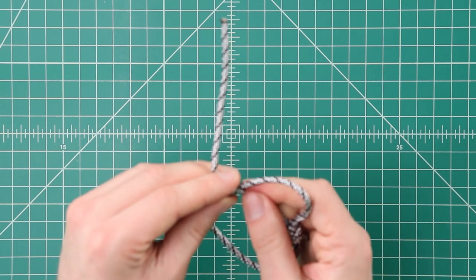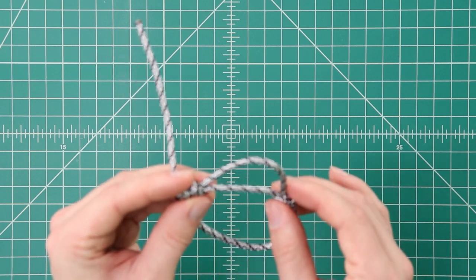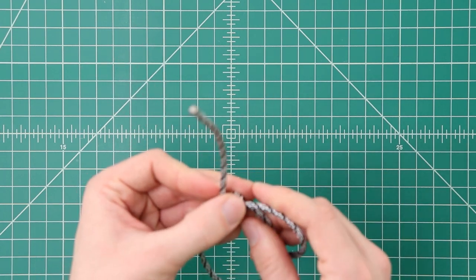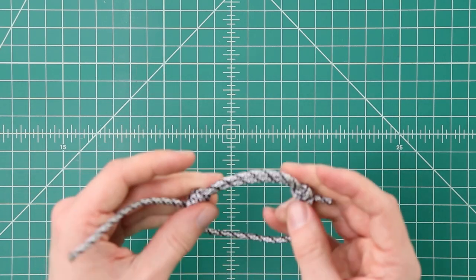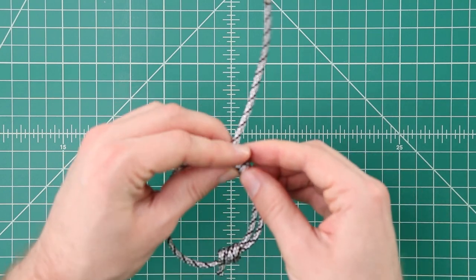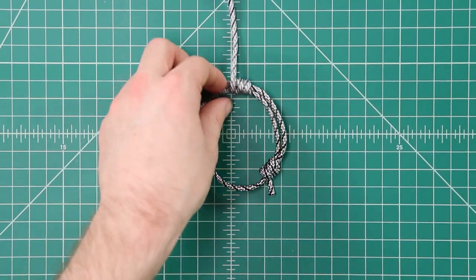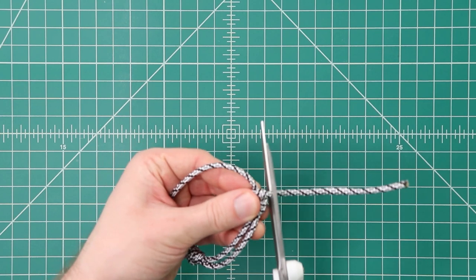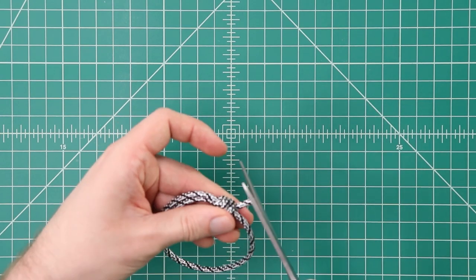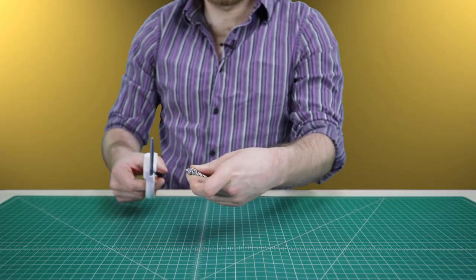The two cords you'll pull are the one in between the knots and then the loose end here. And we have our bracelet. The only thing left to do now is cut off our ends and seal them with a lighter.